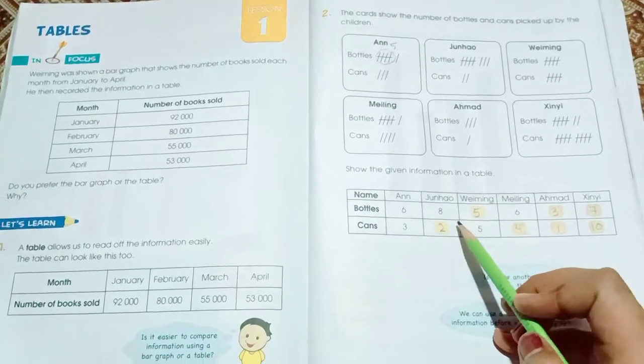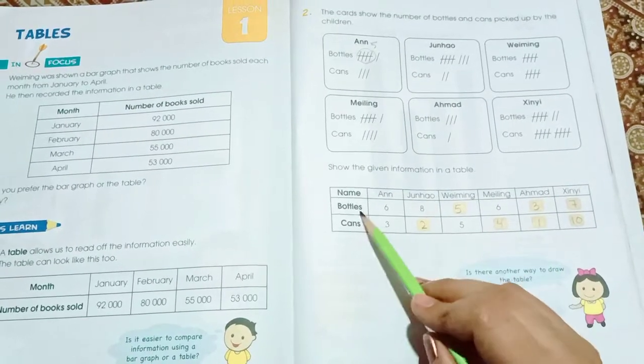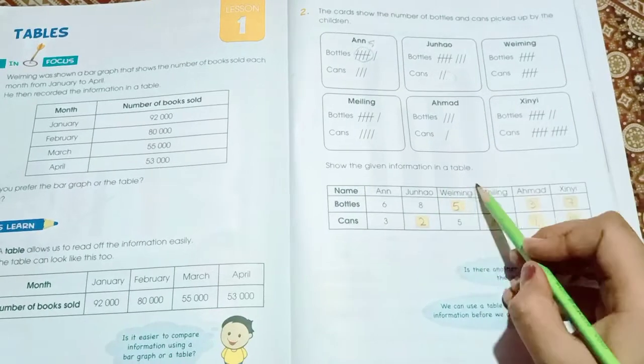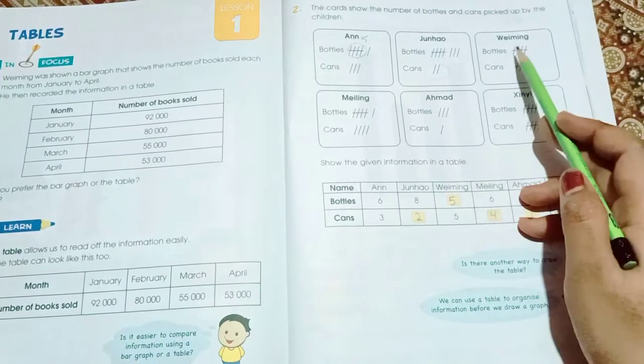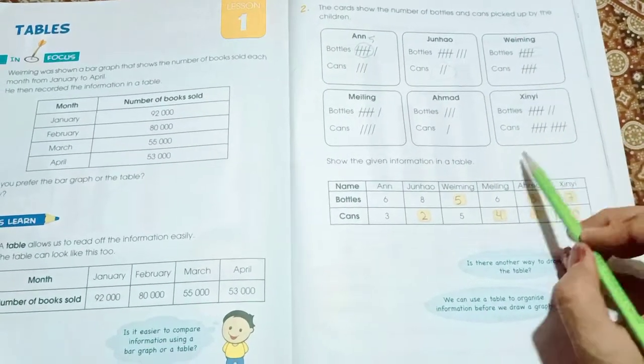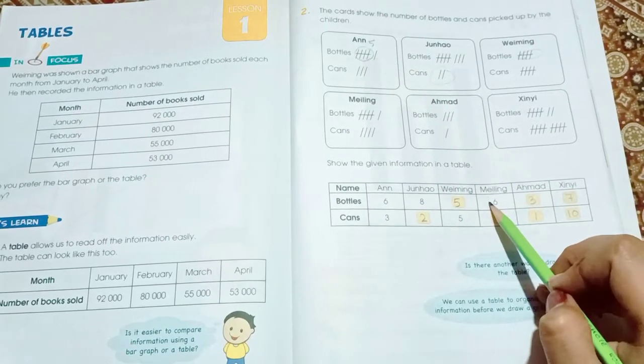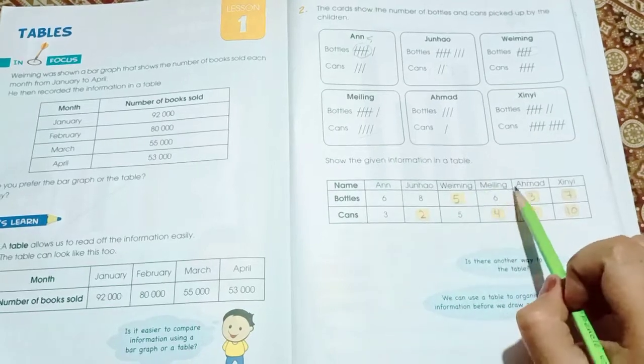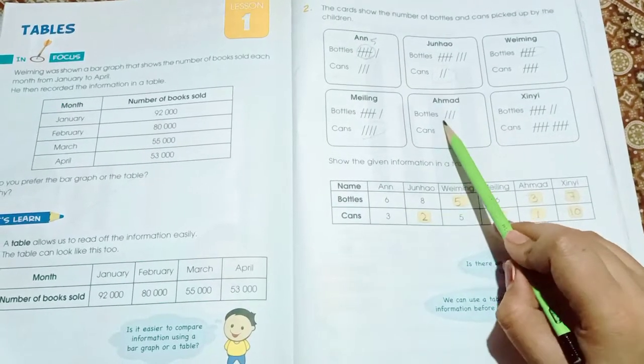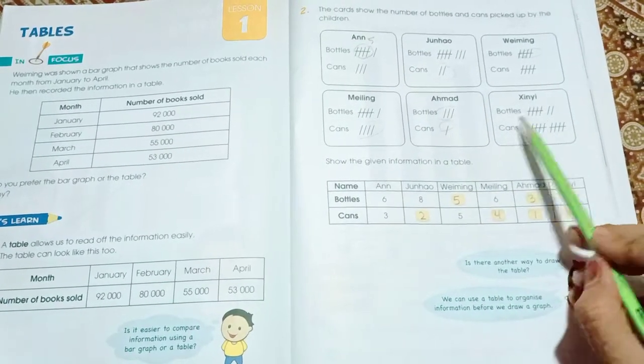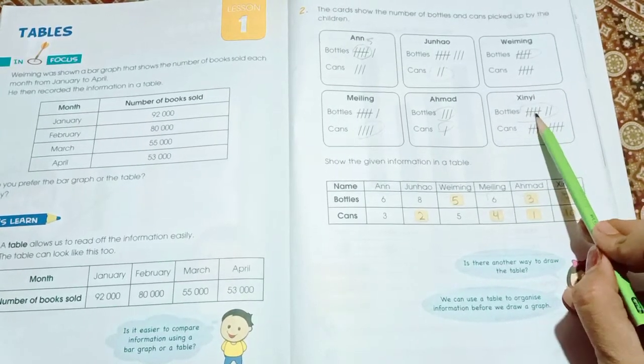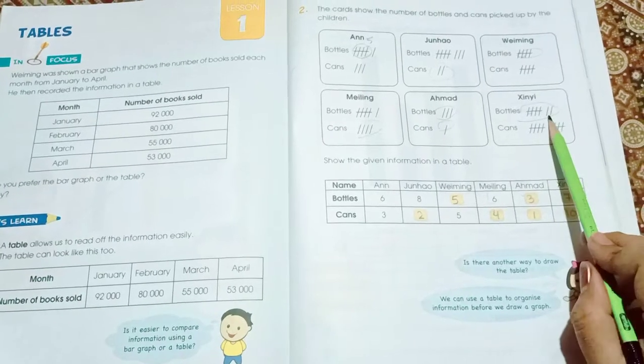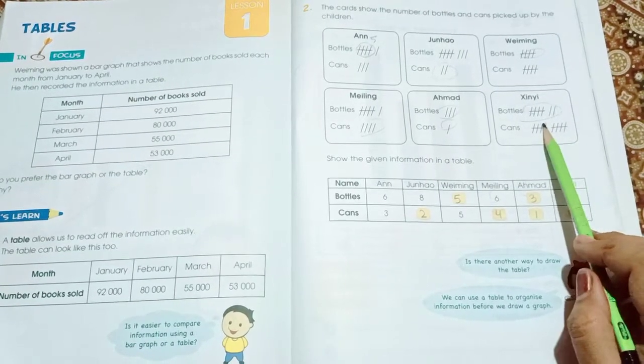Some of them were already done. So John Howe picked 8 bottles and how many cans he picked? He picked 2 cans. Weiming put 5 bottles. Meleng put 6 bottles and 4 cans. Ahmed picked 3 bottles and 1 can. Zinni picked 7 bottles. 5, 6, 7 and this is 5 plus 5, 10. 7 bottles and 10 cans.